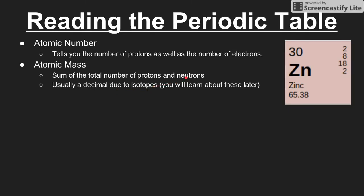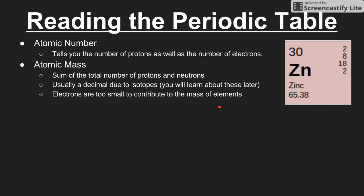As a sneak peek on isotopes: isotopes have different numbers of neutrons than what we see in a normal element. For zinc, most of the time you end up with 65 total protons and neutrons. Some isotopes will have more neutrons, which pushes the decimal slightly higher. For now, what you need to know is that the atomic mass is the sum of protons and neutrons, and you simply round it — so round down to 65 and use that as your value. Also note that electrons are way too small to contribute to the mass of elements, so they are not taken into account here.